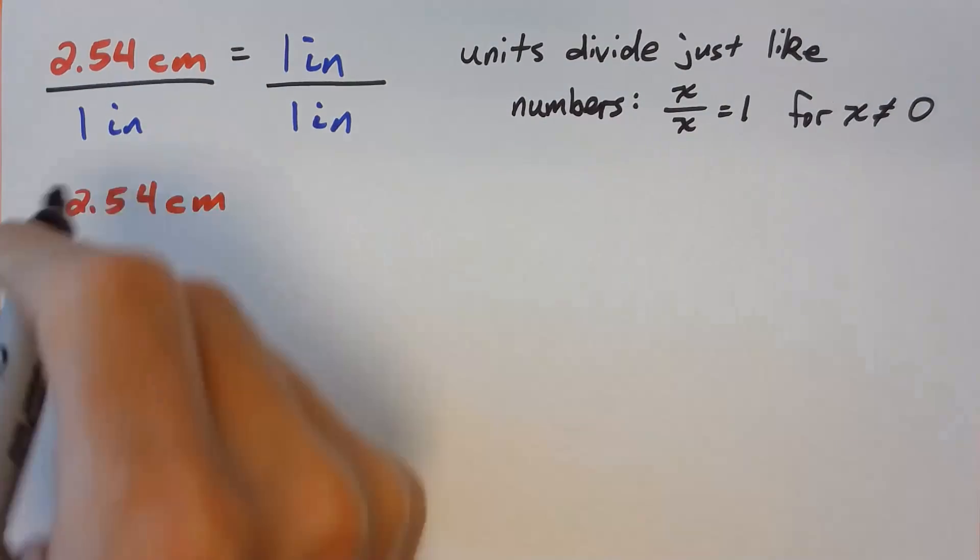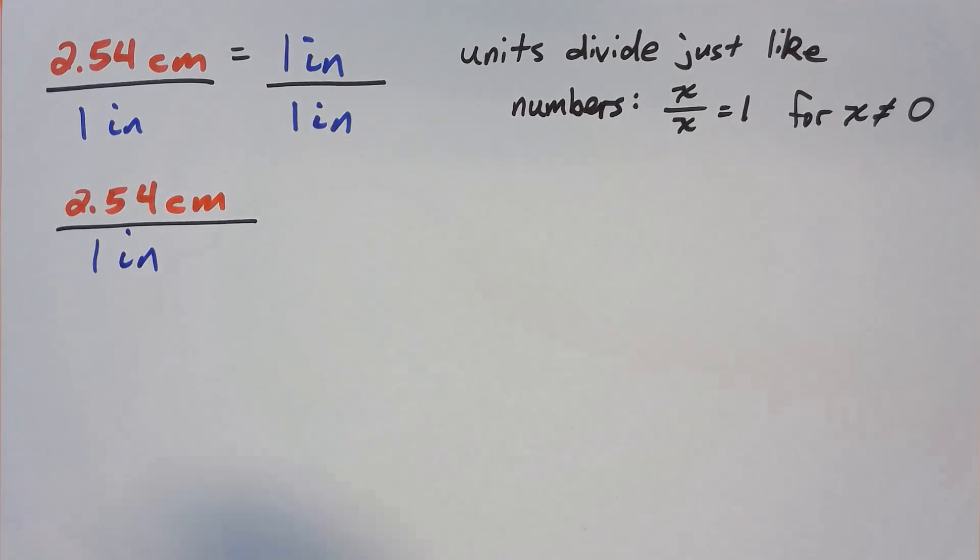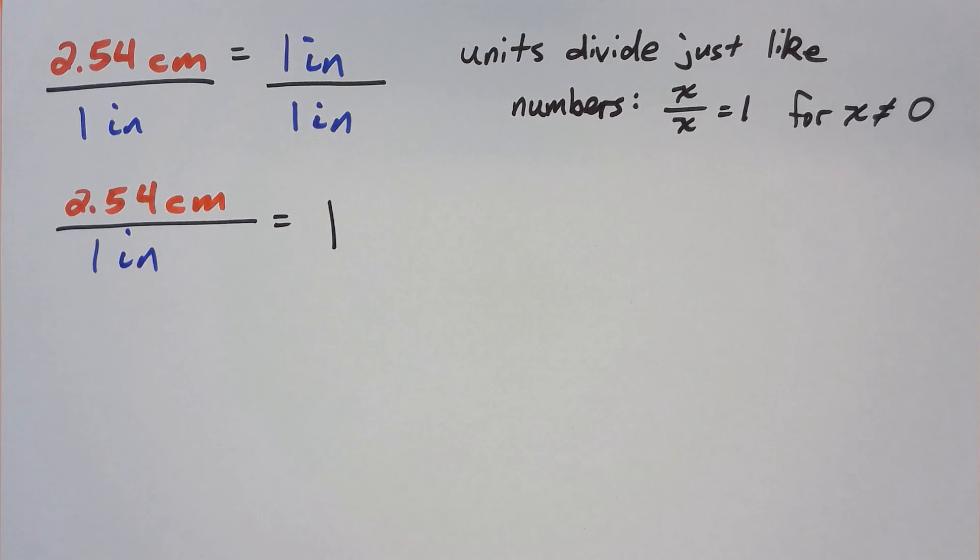This means that the right side reduces to 1, or that the inches cancel. On the left side, we are left with 2.54 centimeters per inch. Since this ratio is equal to 1, we can multiply any quantity by this ratio and it leaves that quantity unaffected.